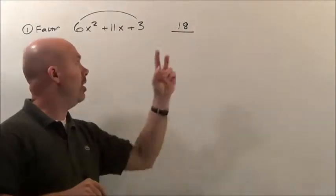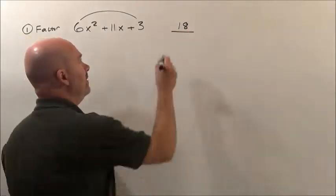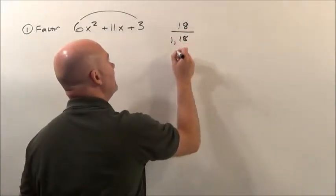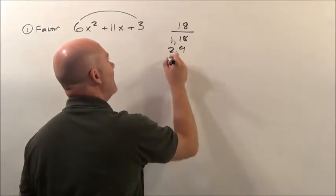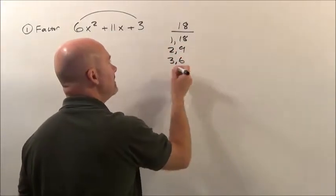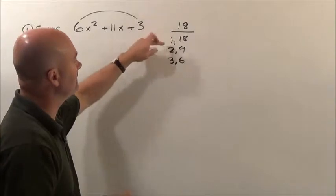We now think of what are the multiples of 18. There's 1 times 18, 2 times 9, 3 times 6. I know I'm done. It's just these 3 pieces.